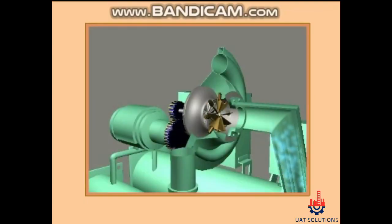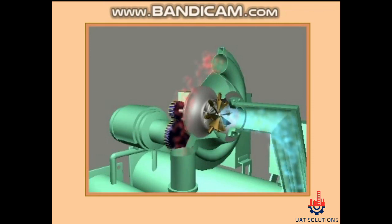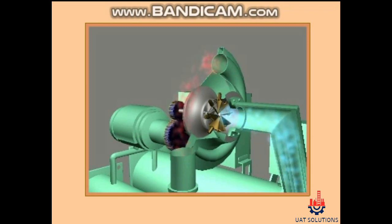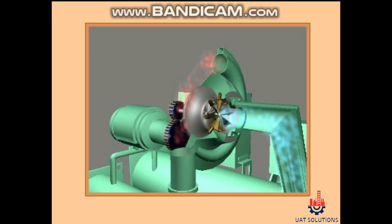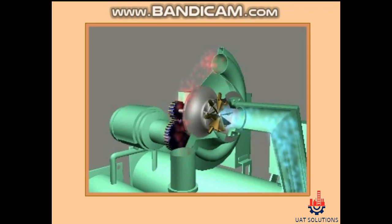Centrifugal compressor chiller package: liquid refrigerant boils in the evaporator and becomes refrigerant vapor. The refrigerant vapor then passes through the pre-rotation vanes and into the eye of the impeller. As the impeller rotates, the refrigerant is compressed and discharged into the condenser.